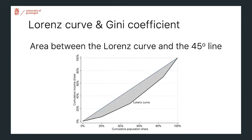That's why the Lorenz curve is a very powerful instrument for thinking about inequality. The other reason it is important is that it's closely related to the Gini coefficient. The Gini coefficient is equal to the area between the Lorenz curve and the 45-degree line — the area shaded in gray here.